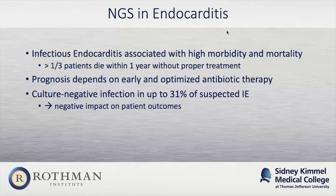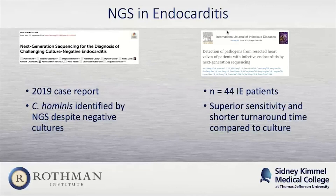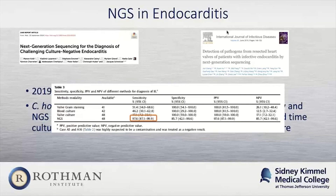Another field is cardiology, where infectious endocarditis is a major problem and early, optimized antibiotic treatment is very important. Similar to PJI and other areas of orthopedics, culture-negative infection is a big problem. A couple of fairly recent studies involving endocarditis — one a case report showing NGS was able to identify an infectious organism, and another larger study of 44 patients — showed very high sensitivity of NGS compared to culture across many different sample types.